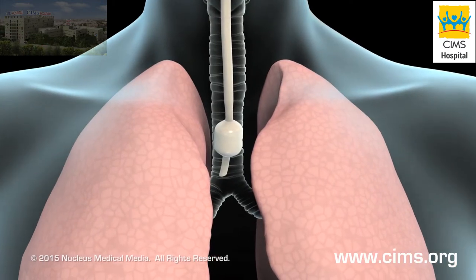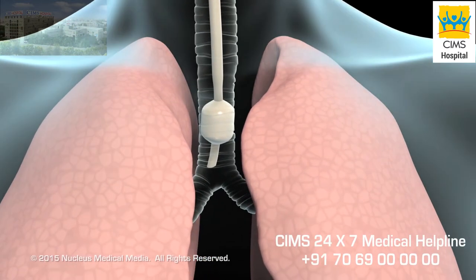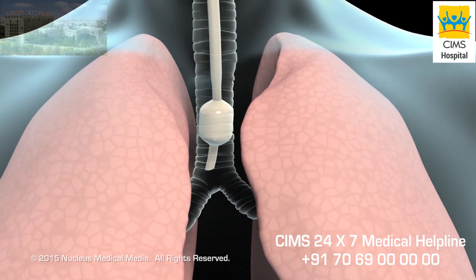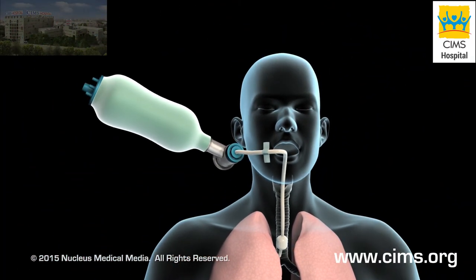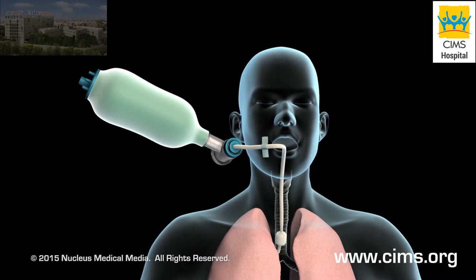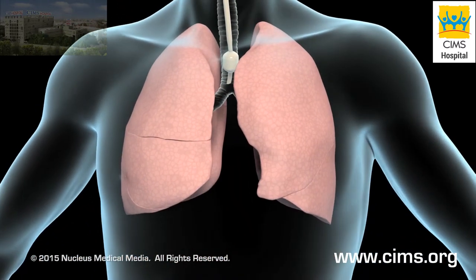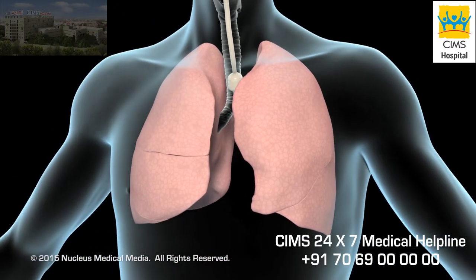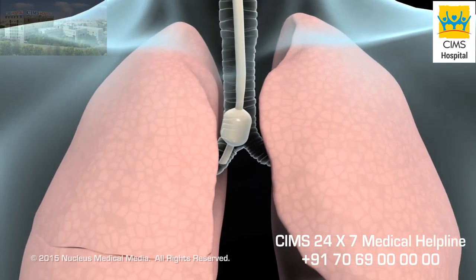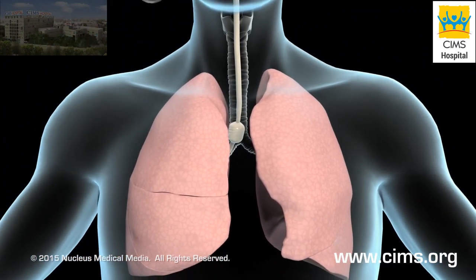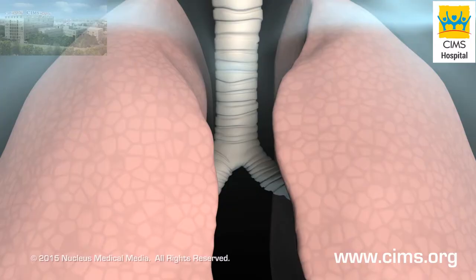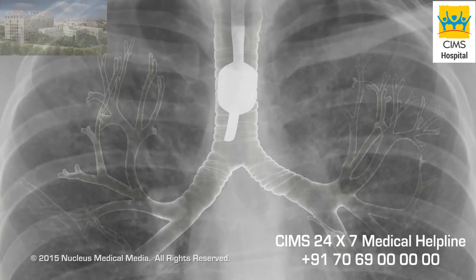Your doctor will check to see that the tube is properly positioned in the lower part of the trachea by inflating your lungs with a special bag and listening for breath sounds on both sides of your chest. If the end of the tube is too low, both lungs will not receive the same amount of air. In some cases, an x-ray is taken immediately after intubation to confirm the tube's placement.